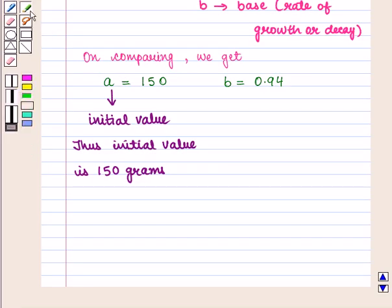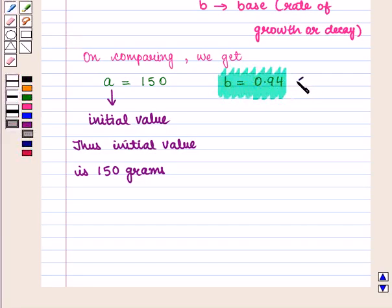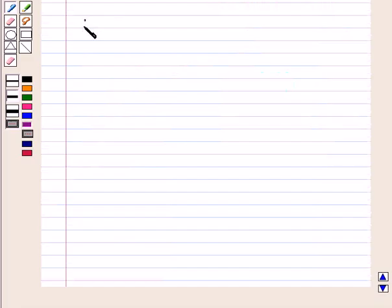Also, here b is equal to 0.94, which is less than 1. So it shows decay.